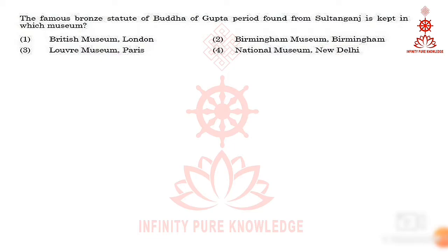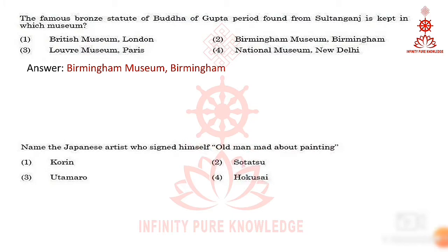Moving to the fourth question: the famous bronze statue of Buddha of Gupta period found from Sultanganj is kept in which museum? The answer is the Birmingham Museum, in Birmingham, a city in England.